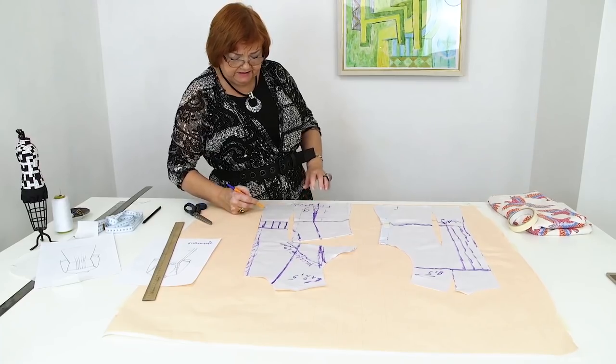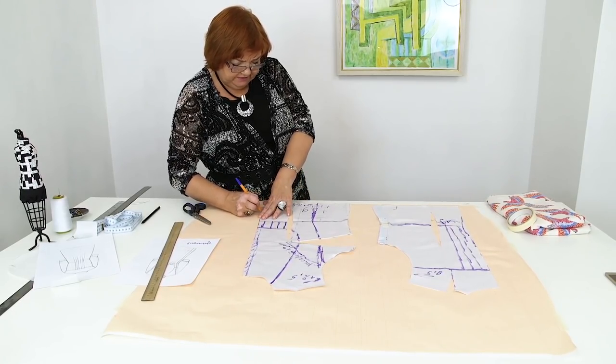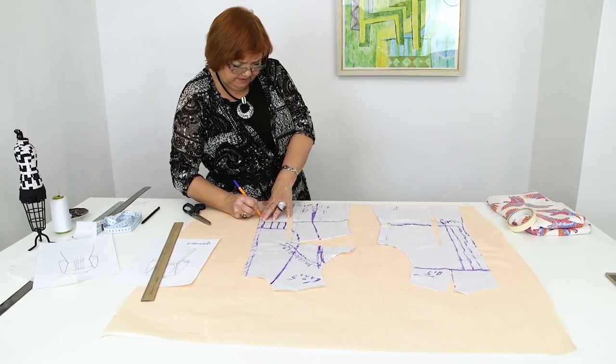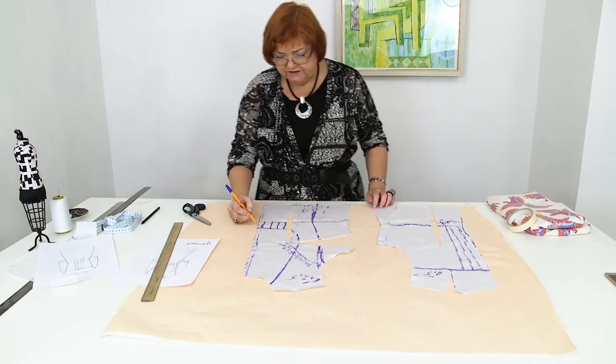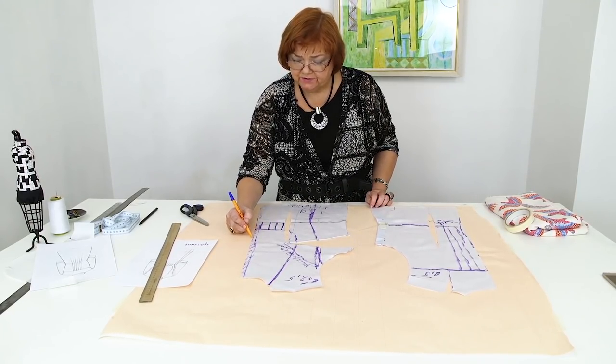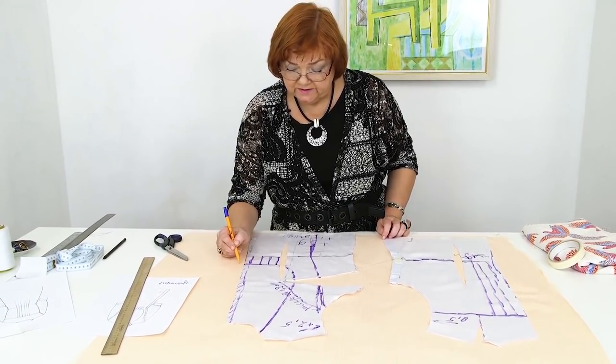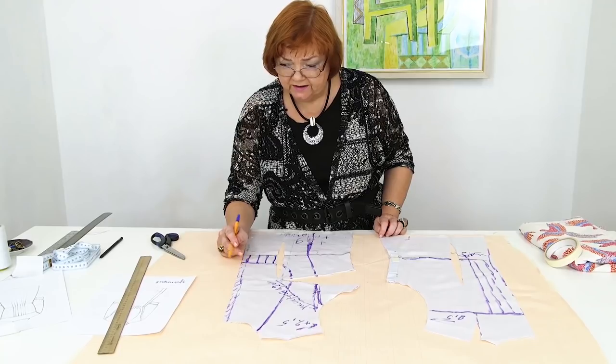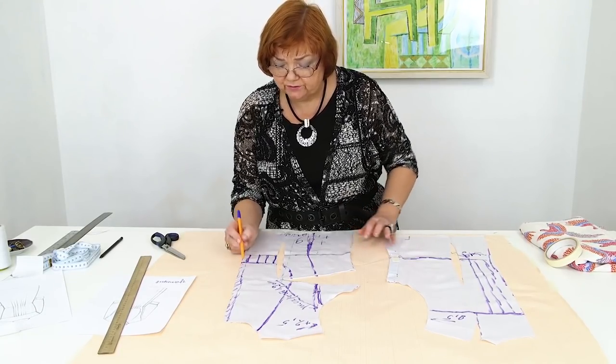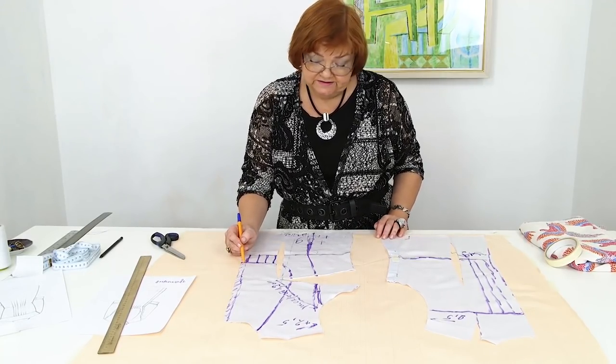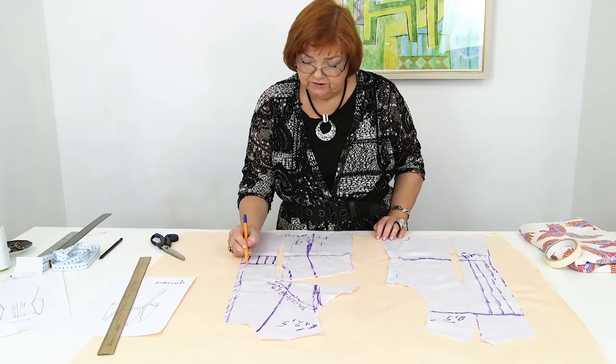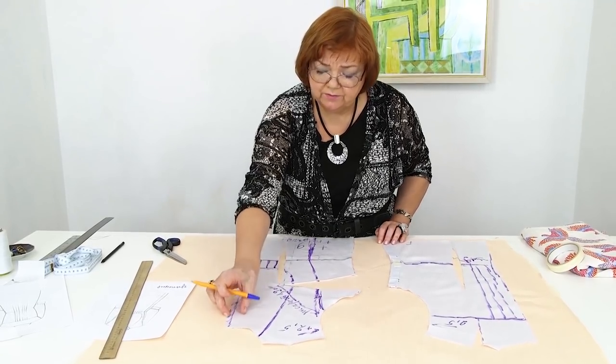This is the center front. I'll sign it. This is also the center front. I remind you that this is the yoke. I should add at least 2 cm for the bottom stand here. 7 mm for the seam and 3 cm for the placket. I'll sign that I need to add 2 cm here.